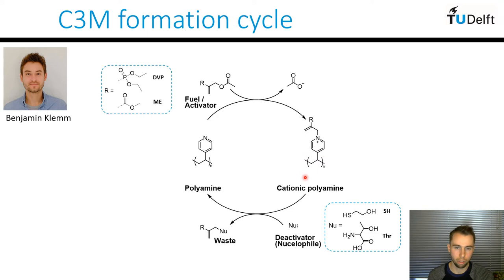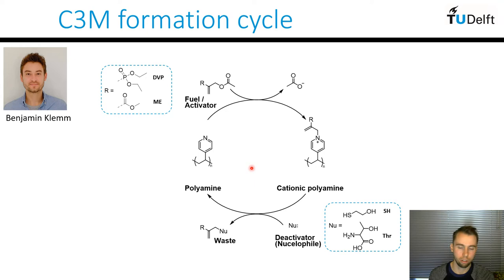The cycle is quite tunable. The forward reaction rate can be tuned by the reactivity of the activating species — today we're looking at two examples abbreviated as DVP and ME, with DVP being the less reactive of the two. Similarly, the back reaction can be tuned by the nucleophilicity of the second nucleophile in solution. For a relatively fast back reaction you want a strong nucleophile such as a thiol — in this case mercaptoethanol — and for a slower back reaction you can use a weak nucleophile such as a primary amine.